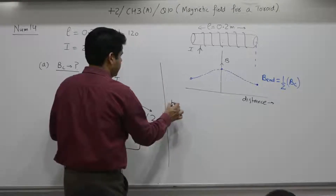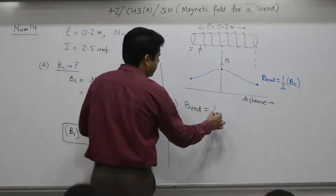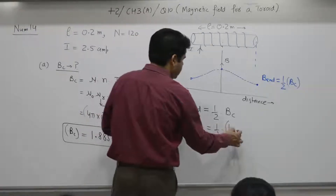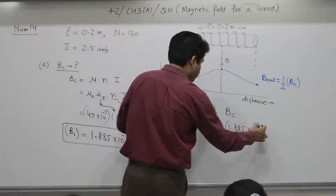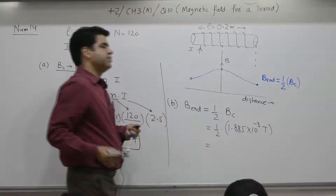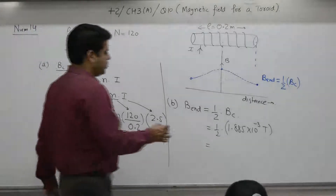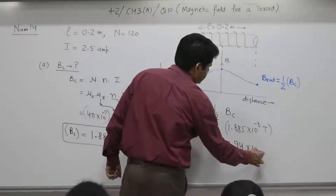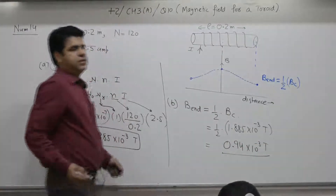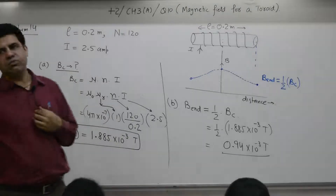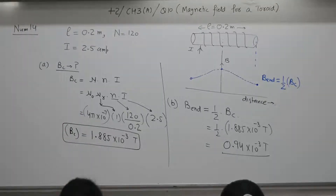Second part: B at end is equal to half of B at center. B at center is 1.885 × 10⁻³ tesla. So B at end comes out to be 0.94 × 10⁻³ tesla. For a finite solenoid, at the end it is half. For an infinite solenoid the factor remains the same throughout. This was numerical number 14.